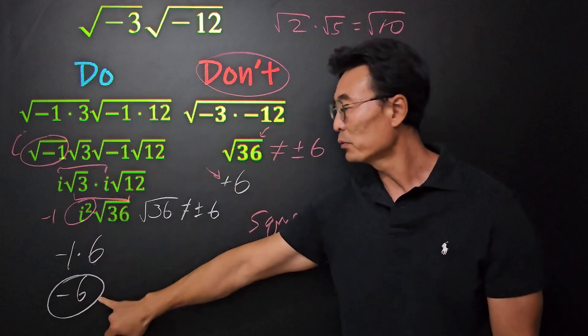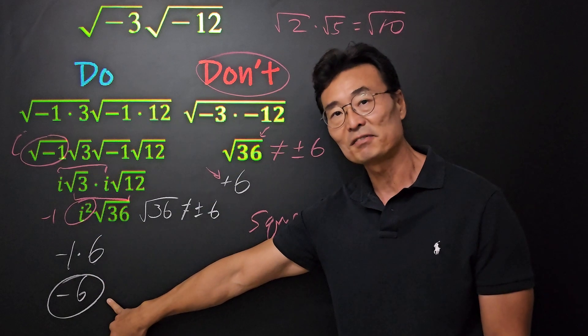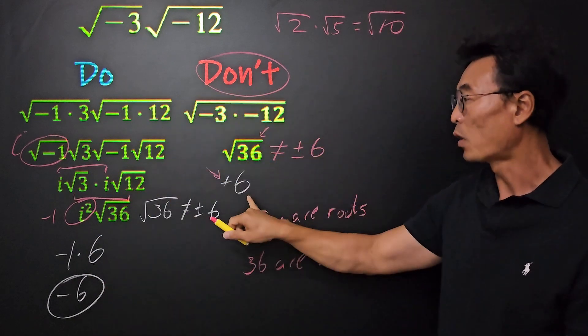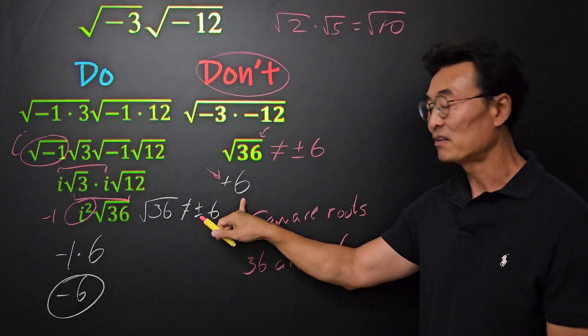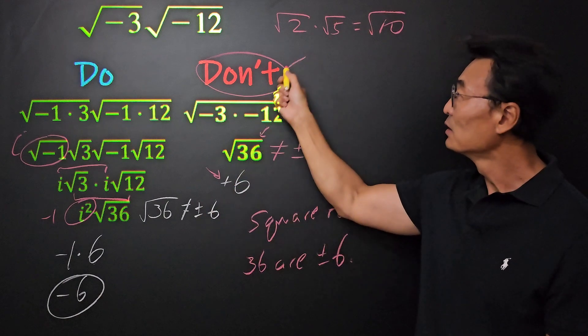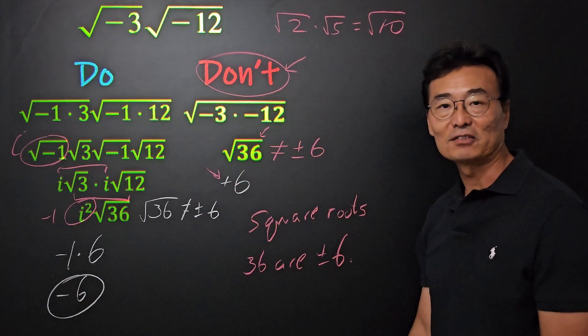So as you can see, if we do it the correct way, we end up with the final answer of negative 6. Whereas if we do it the wrong way or the incorrect way, we end up with the answer of positive 6, which of course is the wrong answer.